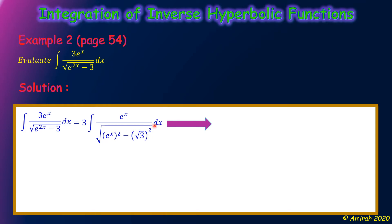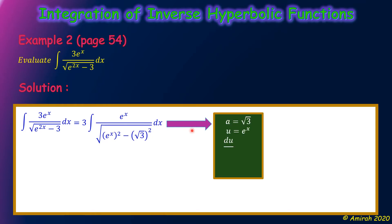Then we can use u-substitution. Our a is the constant √3, and our u is e^x. Remember, a should be a constant and u should be f(x). After we identify u, we need to differentiate. So when we differentiate, the symbol becomes du/dx because we have u in terms of variable x. When we differentiate e^x, we get back e^x.